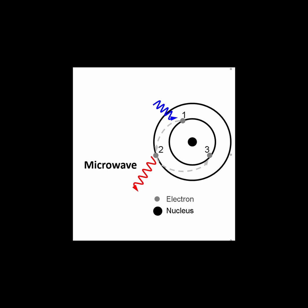When an electron moves between two of these states, it emits a specific type of microwave radiation.